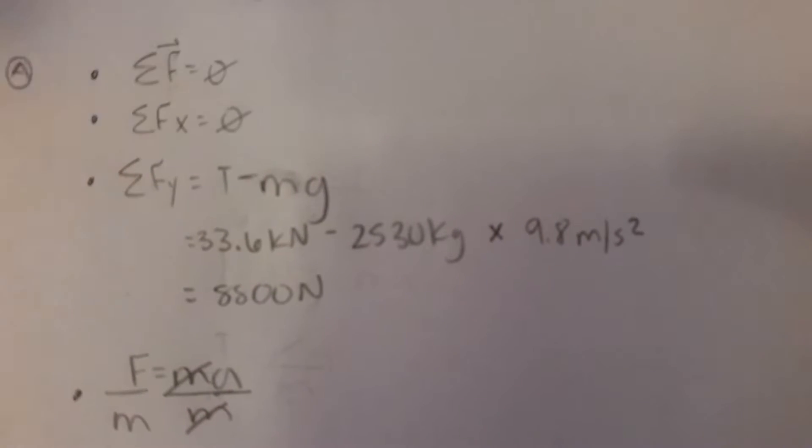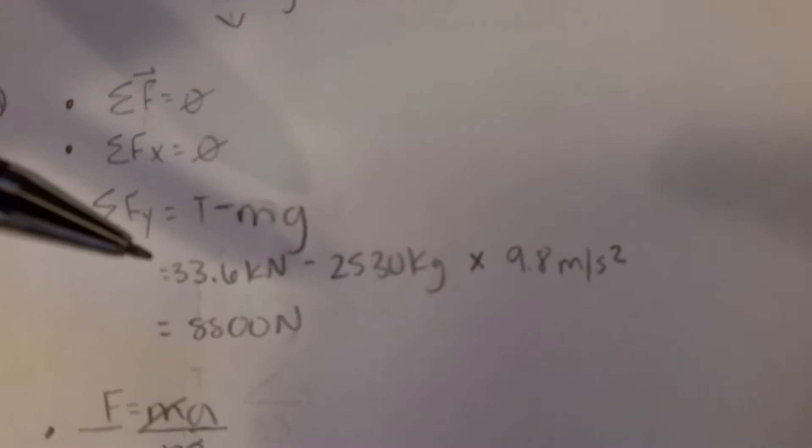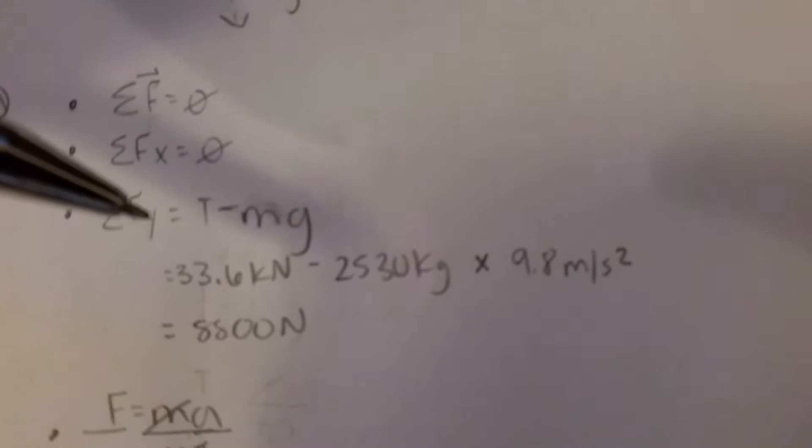And being that it's an elevator and it moves up and down, the formula for Fy would be T minus mg. So I did my calculation here: tension is 33.6 kilonewtons minus mass, which is 2,530 kilograms, times 9.8 meters per second squared, which is gravity.